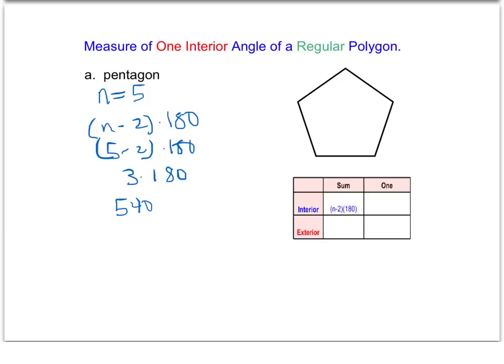So we know that any pentagon, when we measure the sum of the interior angles, we are going to get 540 degrees. Since we're told that this is a regular polygon, we know that each of the five angles is going to be the same measure. So that 540 degrees has to be distributed equally between those five angles.